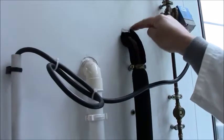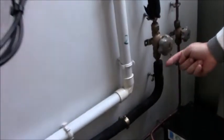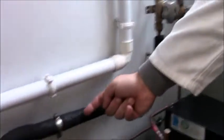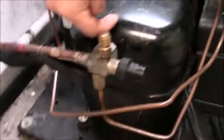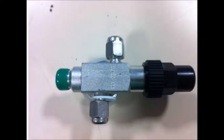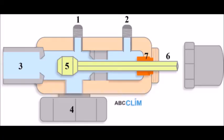On retrouve à l'extérieur de notre chambre froide les vapeurs BP — on reconnaît facilement ce tube car il est isolé. Ces vapeurs traversent une vanne manuelle et sont aspirées dans le compresseur via la vanne de service BP. La vanne de service est un équipement de notre installation bien utile. Elle facilite les opérations de maintenance, de dépannage, de contrôle sur notre circuit frigorifique.